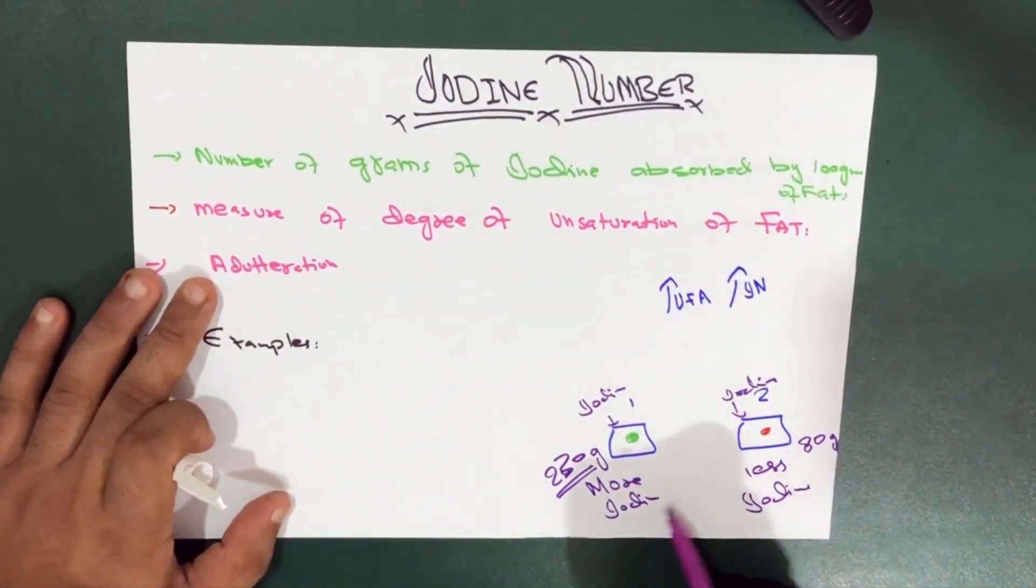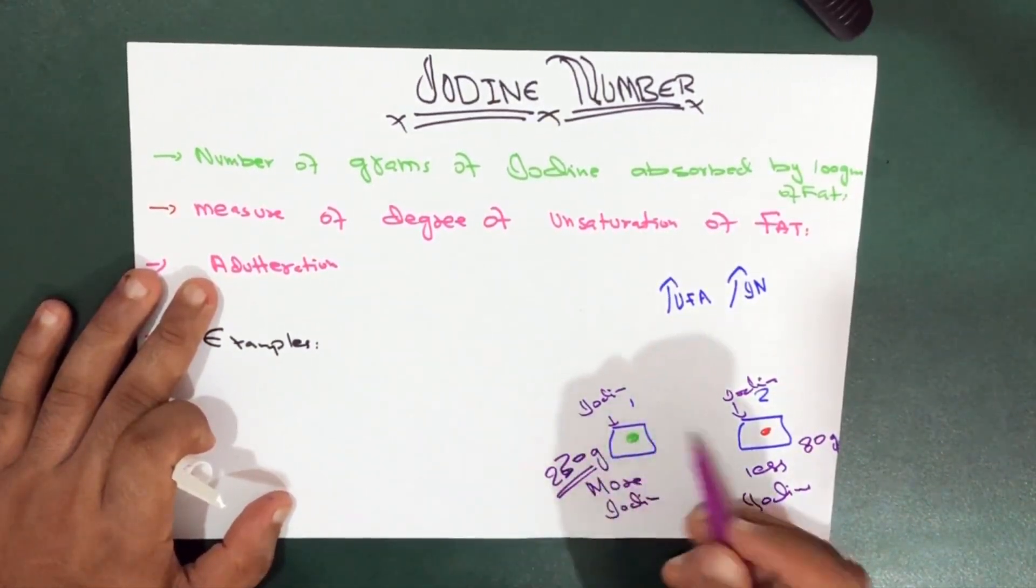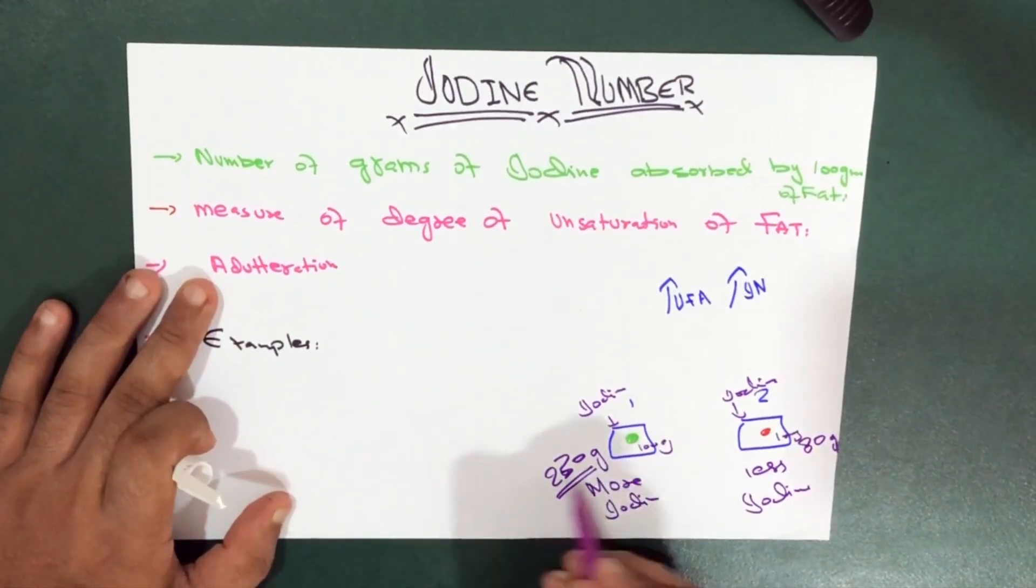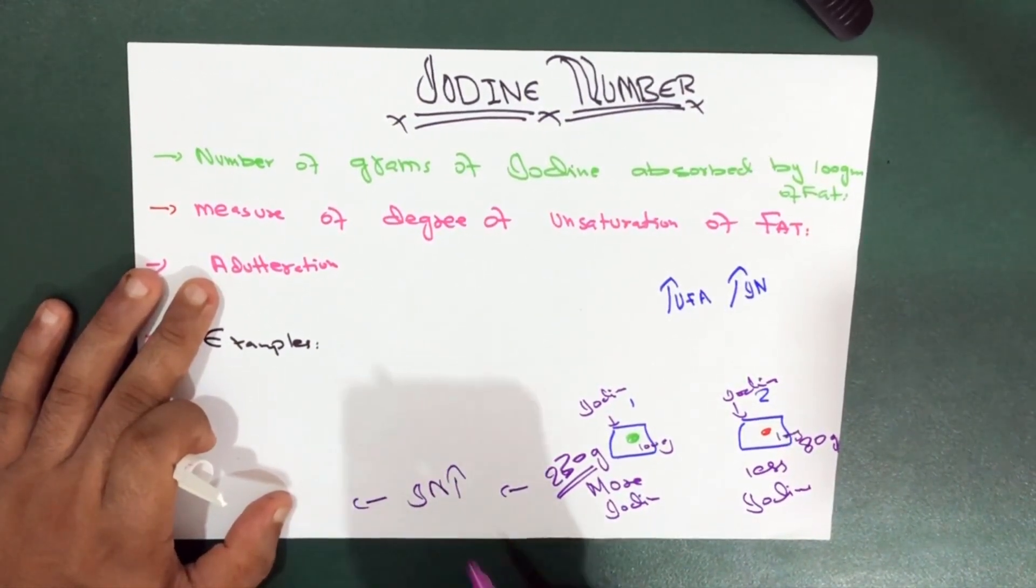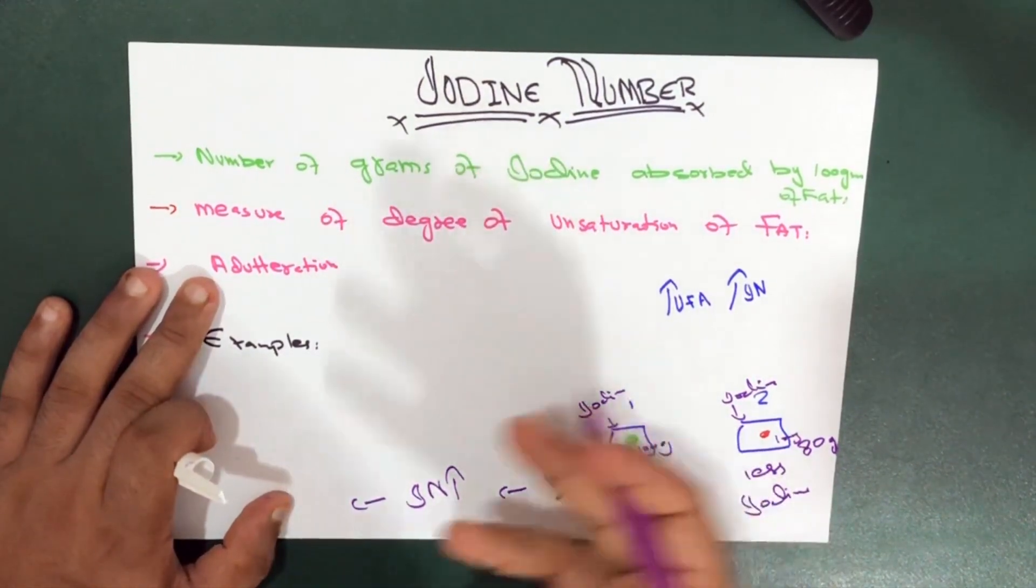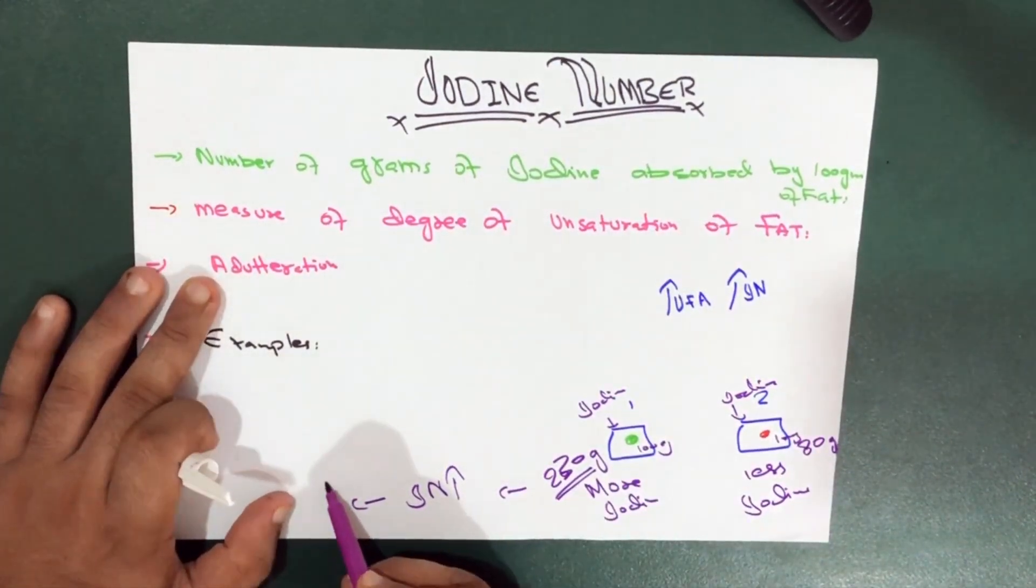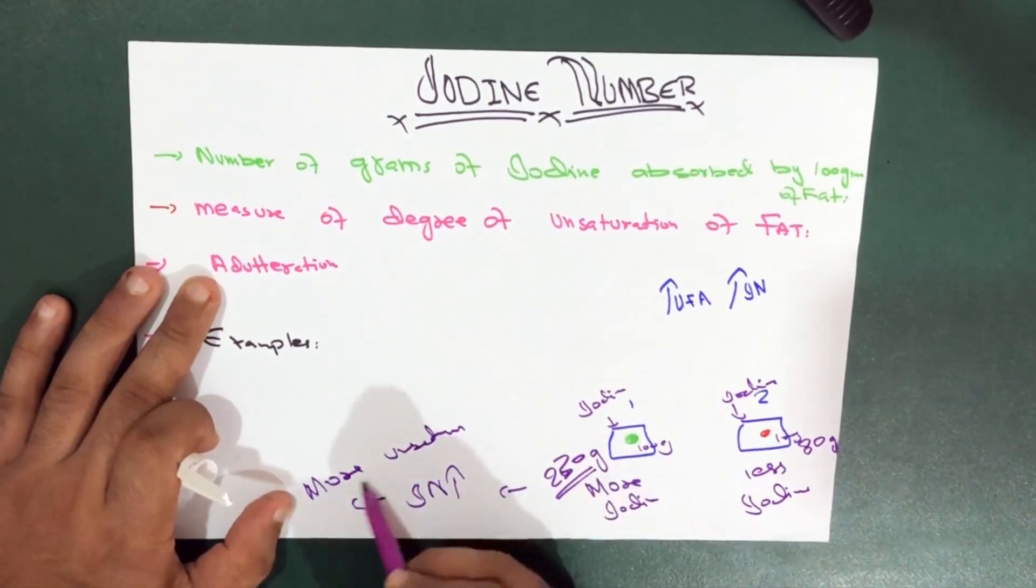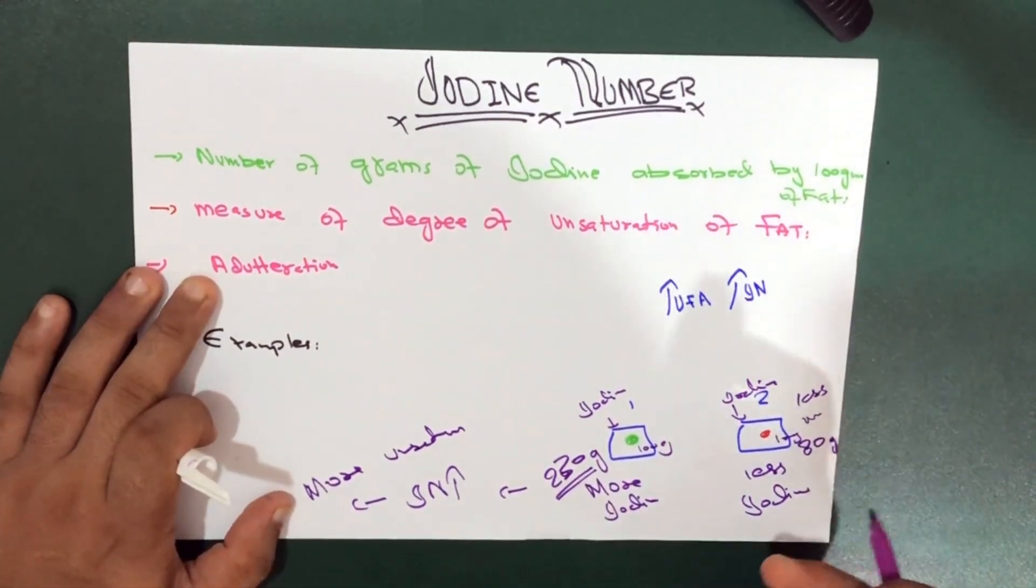So what does this indicate? This fat, which is 100 grams (both are 100 grams), has more iodine number, which means it has more unsaturated fatty acids—more double bonds, which is not good for our health. Compared to this one, this is less unsaturated. How did we know this? Because it absorbed less iodine.